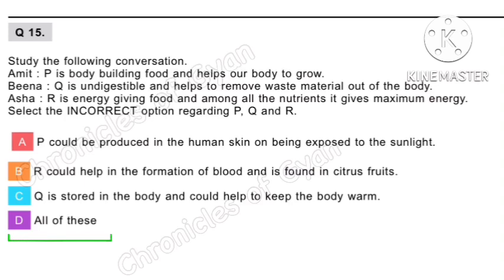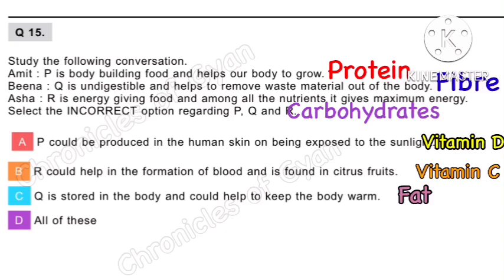Question 15. Study the following conversation. Amis says: P is body-building food and helps our body to grow. Beena says: Q is undigestible and helps to remove waste material out of the body. Asha says: R is energy-giving food — among all the nutrients it gives maximum energy. Select the incorrect option regarding P, Q and R. Here all of options A, B and C are incorrect, so option D — all of these — is the correct answer.